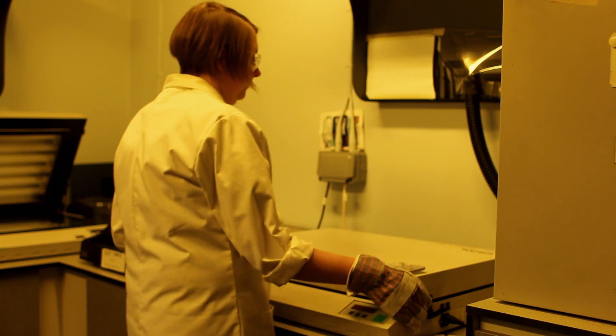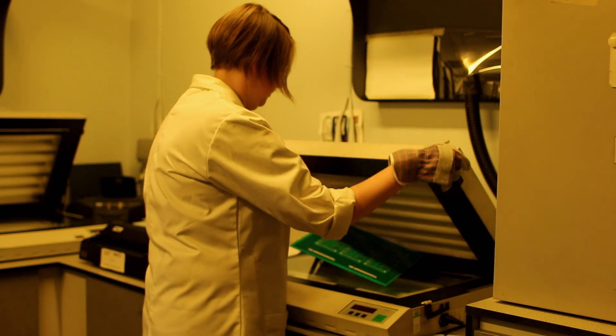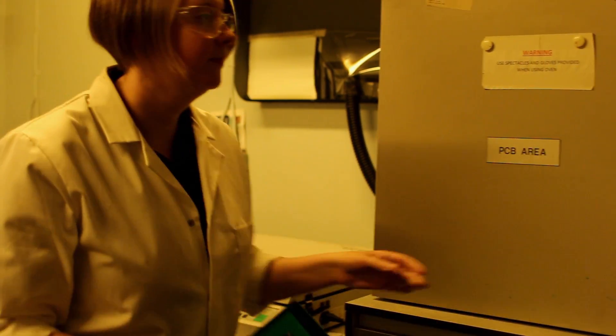The solder mask is then cured again in ultraviolet light and then baked in an oven to further cure it to a hard protective finish.